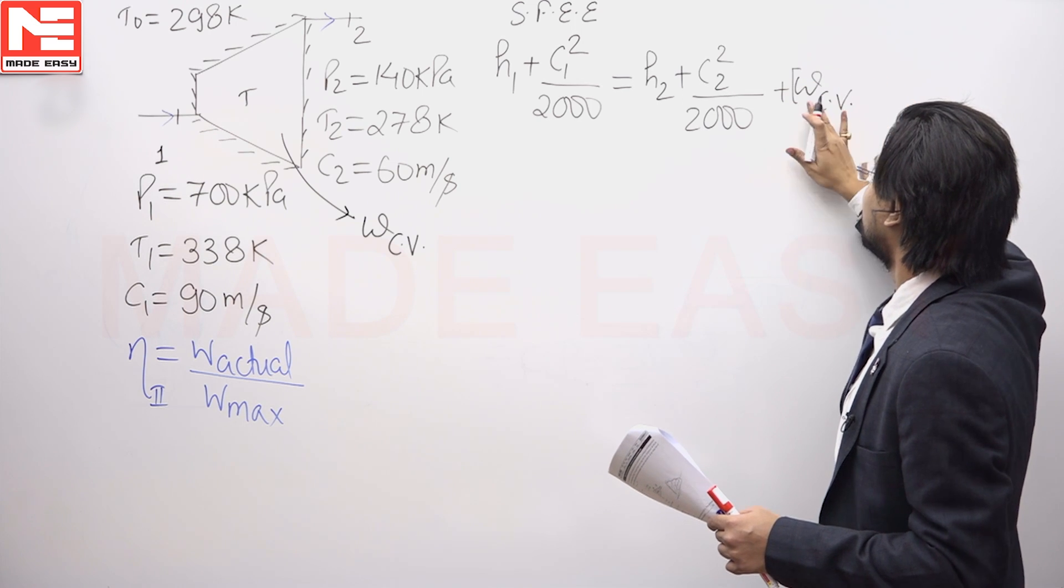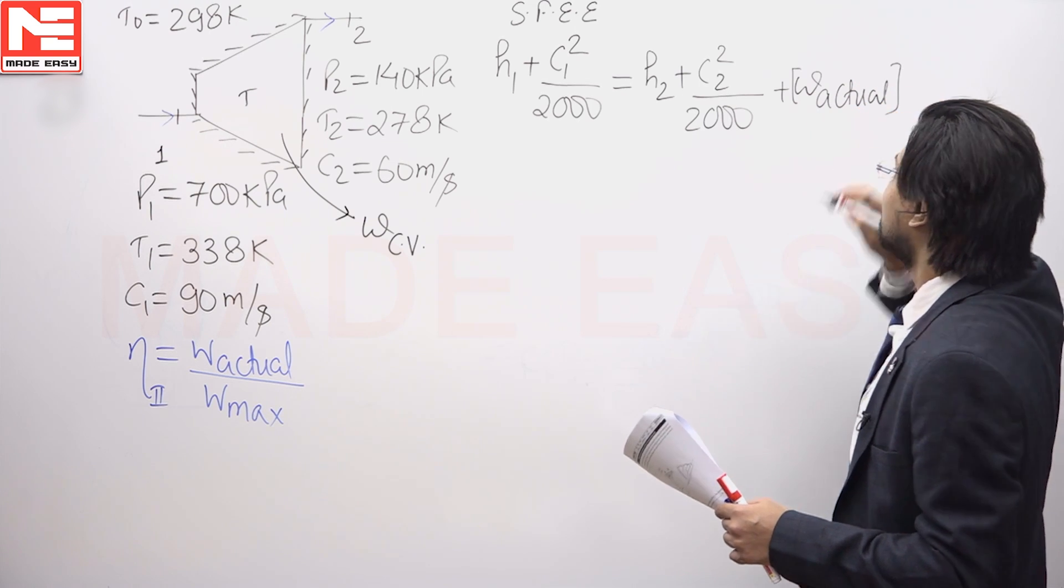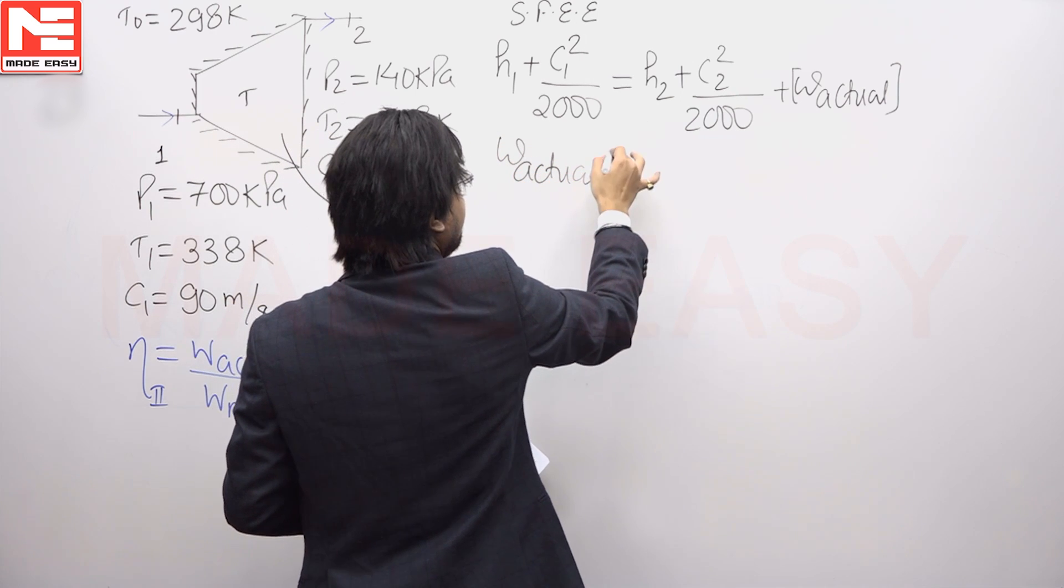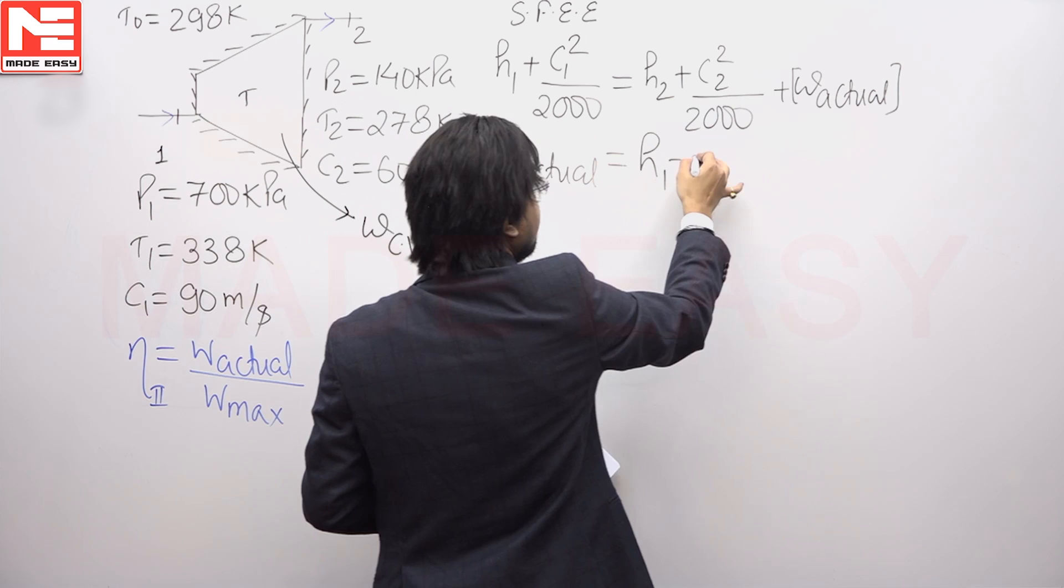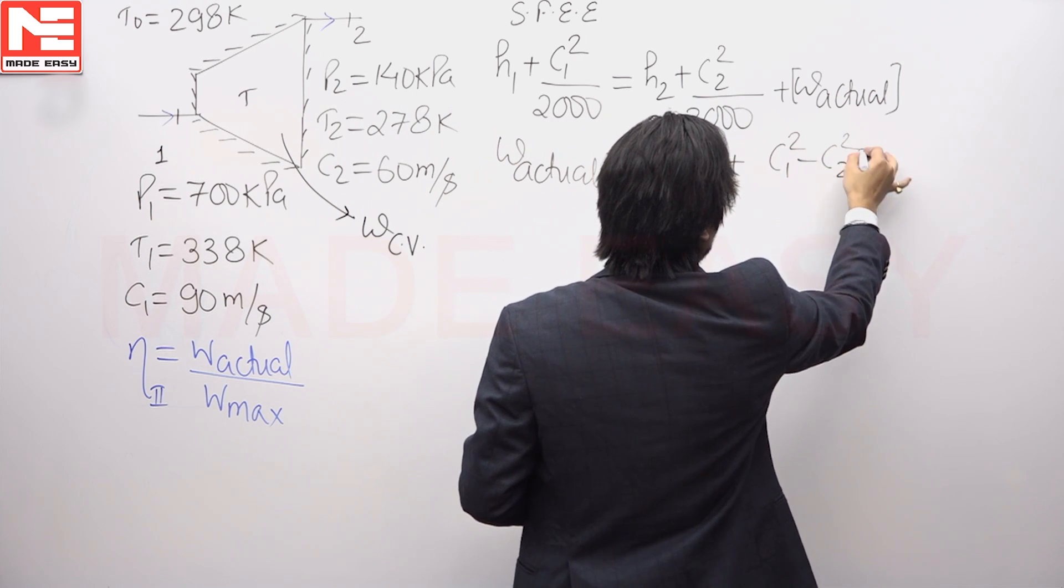This is the actual work which we are going to find out. I will write this as actual work. We can get the actual work Wactual by writing this equals H1 minus H2 plus C1 square minus C2 square upon 2000.